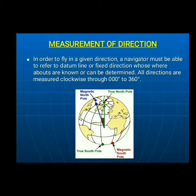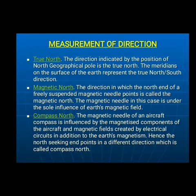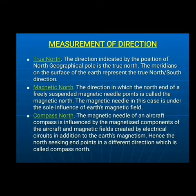Measurement of direction: to fly, a navigator needs a reference line to determine the direction. Directions are measured clockwise from 0 degrees to 360 degrees. True north: the geographic north pole is called true north; all meridians converge here. Magnetic north: the point to which a compass needle points; the earth's magnetic field converges at this point. Compass north: the direction pointed by an aircraft compass under the influence of other magnetized components.